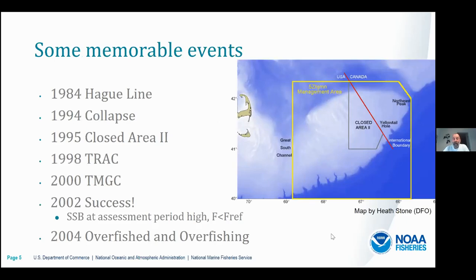Along the way there have been some memorable events. Probably the most notable was in 1984, when the Hague Line separating US and Canadian international waters was declared through international court — you can see it cuts the northeast peak off of George's Bank, declaring it as Canadian waters with US waters to the west. Then in the mid-90s there was the collapse of cod, haddock, and yellowtail that led to major management changes, and in 1995 closed area 2 was made a year-round closed area.